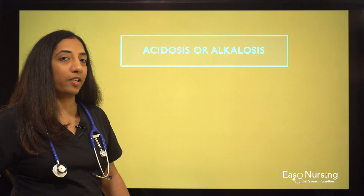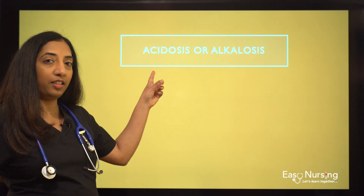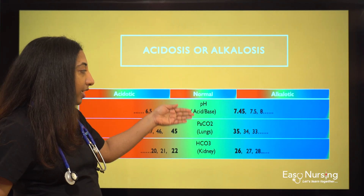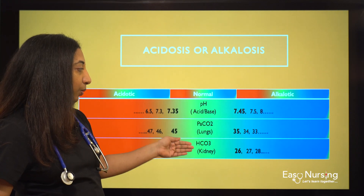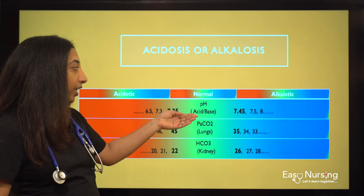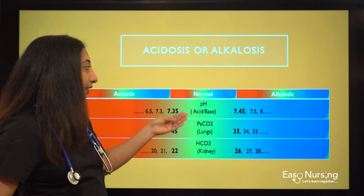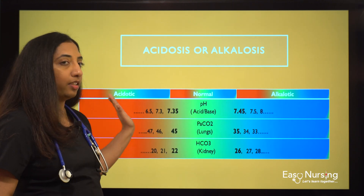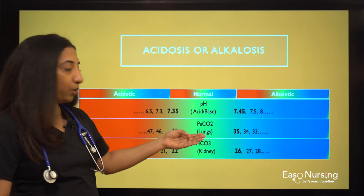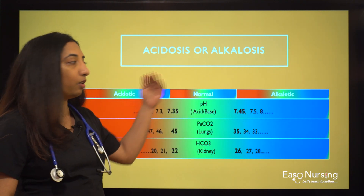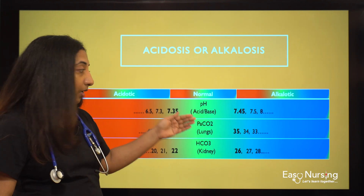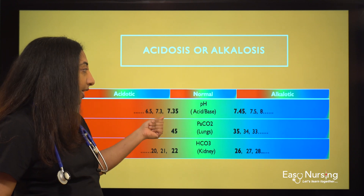Let's talk about the first step of interpreting ABG — figuring out if it is acidosis or alkalosis. I have a little table here with three main components: pH, PaCO2, and bicarb. pH is the main basic component which we have to use to figure out whether the sample is acidotic or alkalotic. We also need to know if PaCO2 and bicarb fall under acid or base.